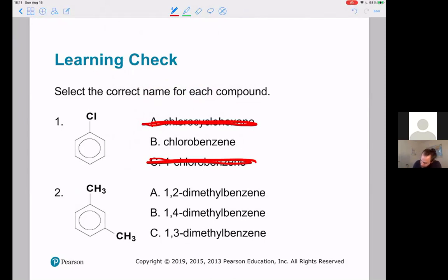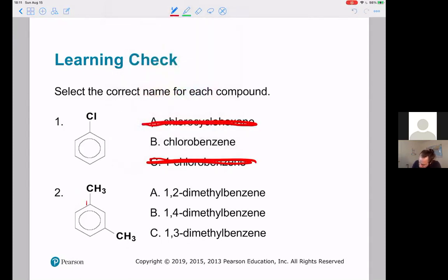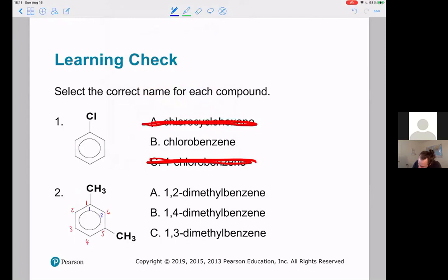For the dimethylbenzenes, we just have to number. I could go counterclockwise 1, 2, 3, 4, 5, 6, or clockwise 1, 2, 3, 4, 5, 6. Which numbering scheme is correct—red or blue? It's all about keeping your numbers as low as possible, so I want to choose the blue numbering scheme, which means 1,3-dimethylbenzene is correct. In this nomenclature scheme, you treat it exactly like cyclohexane, but instead of the parent chain being cyclohexane, it's benzene.